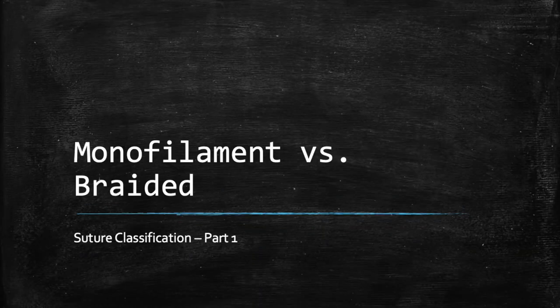Hi everyone, it's Caitlin again from Moon Culture. Suture can be classified in a number of different ways: monofilament or braided, absorbable or non-absorbable, and synthetic or natural. This is part one of a three-part series on suture classification. In part one, I'm going to help you differentiate between monofilament and braided suture.